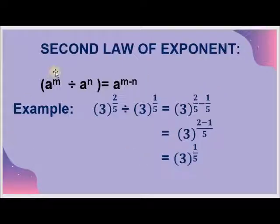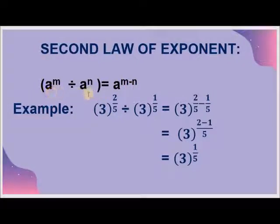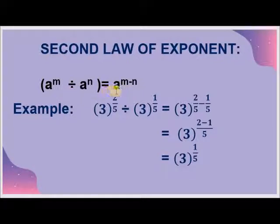The second law of exponents is a raised to the power m divided by a raised to the power n is equal to a raised to the power m minus n. Here we have the same base and different powers, and we are dividing the first term by the second term. It becomes the same base a raised to the power m minus n — here the powers are subtracted.